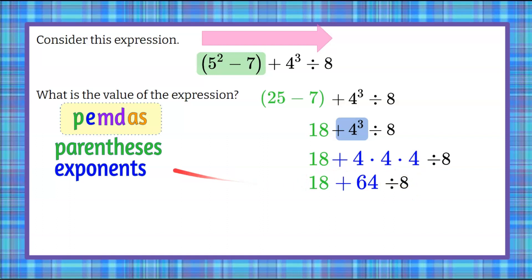So there are no exponents left. Our next thing is our M and our D. Multiply and divide in order from left to right. Very important because you may have more than one, or a multiply and a divide. You don't do multiply first, you do whatever you come in contact with left to right. So this is add. So now we're looking at 64 divided by 8 is our next move. 64 divided by 8 is 8.